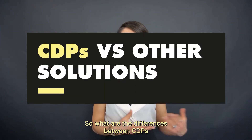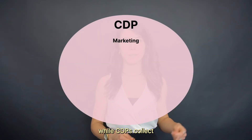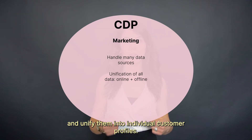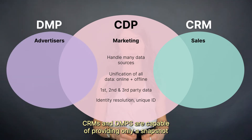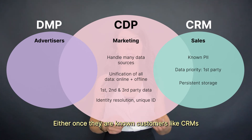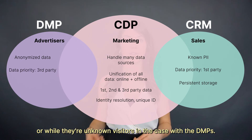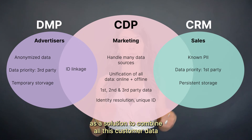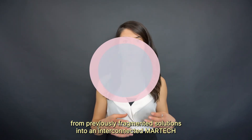What are the differences between CDPs and other marketing solutions like DMPs or CRMs? While CDPs collect all customer data from online and offline sources and unify it into individual customer profiles, CRMs and DMPs are capable of providing only a snapshot of a specific part of the customer profile or journey — either for known customers in the case of CRMs, or known visitors in the case of DMPs. CDPs were created as a solution to combine all this customer data from previously fragmented solutions into an interconnected MarTech stack.